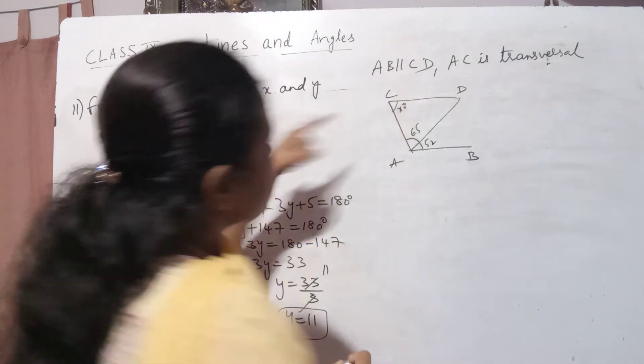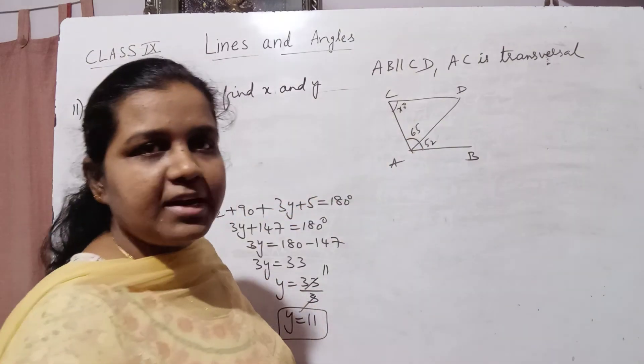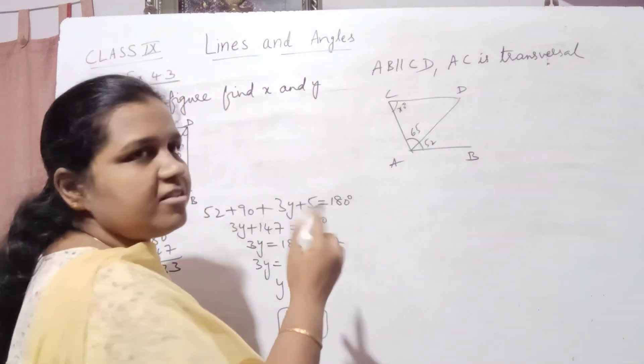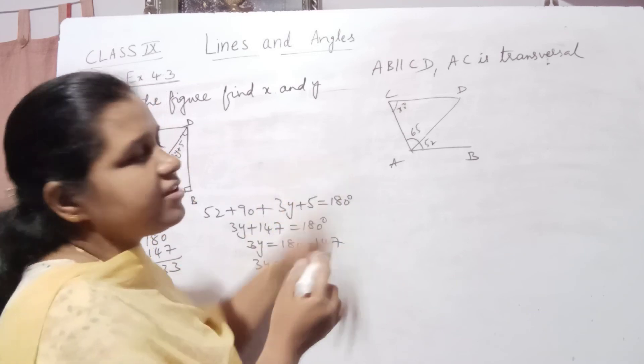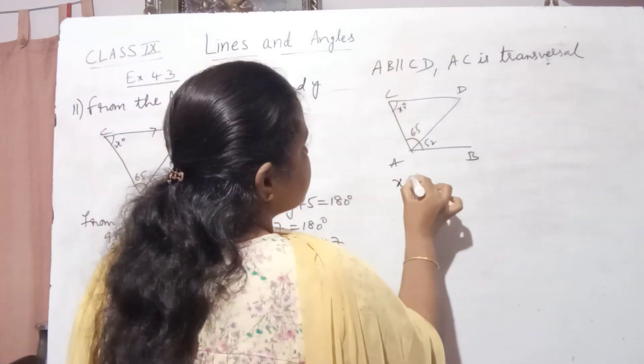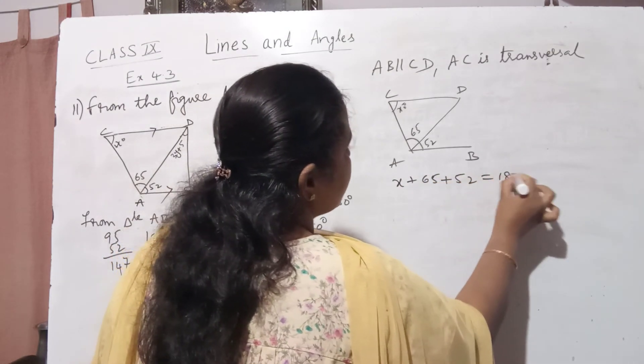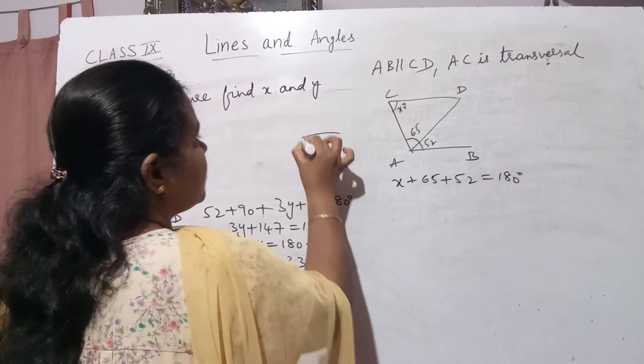So this angle x plus 65 plus 52 is equal to 180 degrees, because the sum of interior angles on one side of the transversal is 180 degrees. So what you can write: angle x plus 65 plus 52 is equal to 180 degrees. That is, when you have two lines like this, this is the transversal.